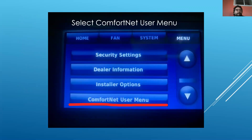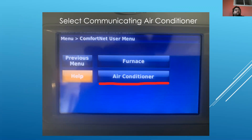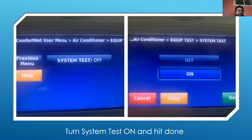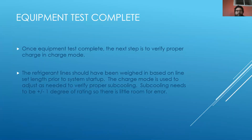Go to the Comfort Net user menu and select air conditioner — it may say indoor unit depending on the thermostat. Then go to equipment test under the Comfort Net user menu and turn the system test on. It will run for about 15 minutes for the full equipment test, checking sensors and making sure everything looks okay. I've been told by Daikin tech support that depending on the temperature outside, it could take anywhere from 15 minutes to an hour. A Daikin rep mentioned someone in Canada doing this test at negative five degrees outside and it took about an hour, so just be patient and wait until the test is done.